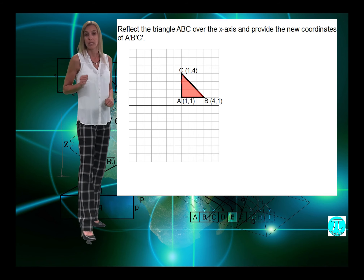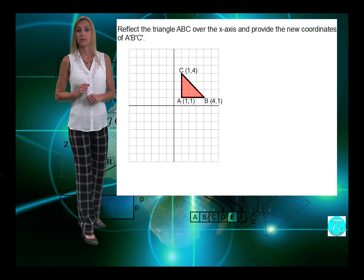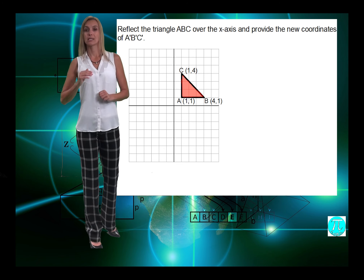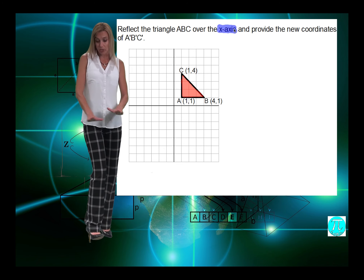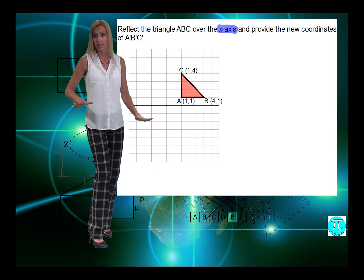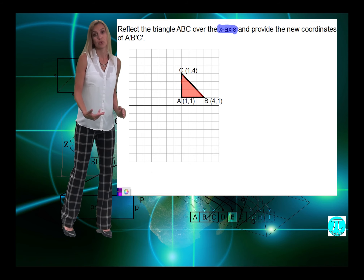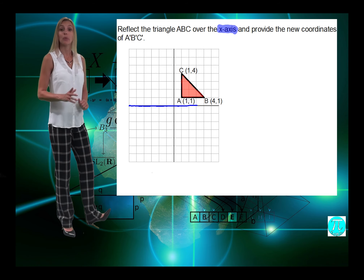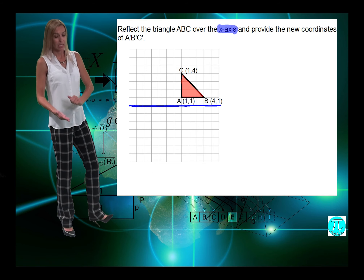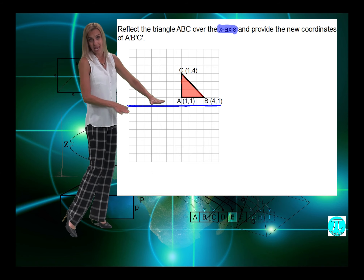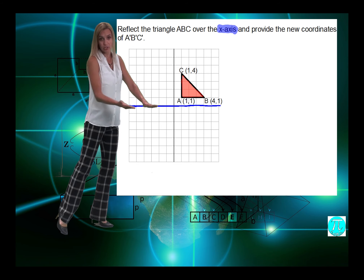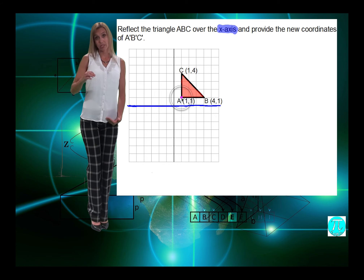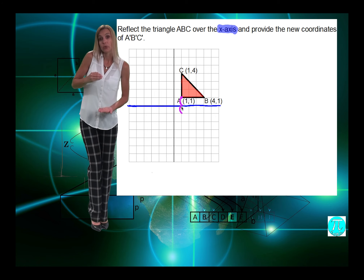Let's look at this example. We have triangle A, B, and C. What we're supposed to do is reflect the triangle over the x-axis — the one that goes left and right. After we reflect it, we're supposed to provide the new coordinates of the triangle. The new coordinates are A prime, B prime, and C prime. Our line of reflection is the x-axis, so we're going to imagine that triangle is looking at itself in a mirror, and every vertex is a certain number of units away from that mirror.